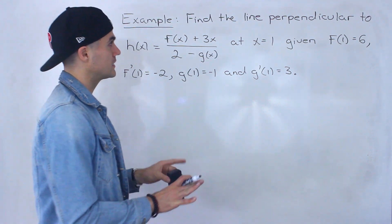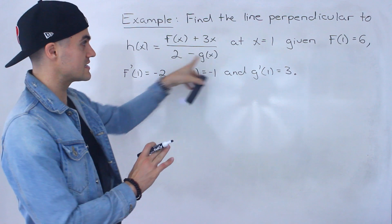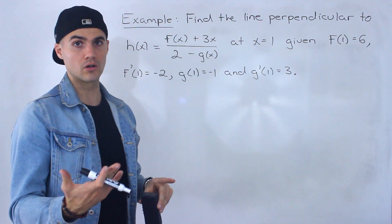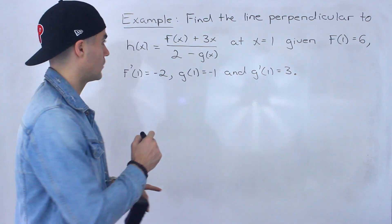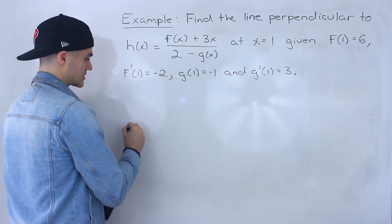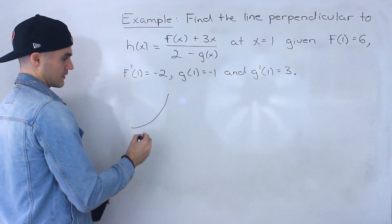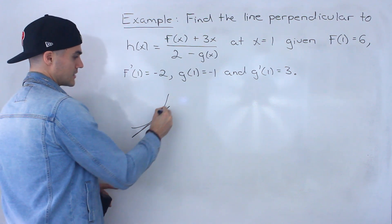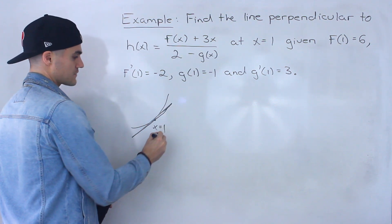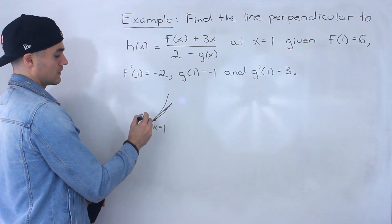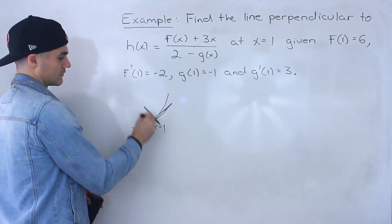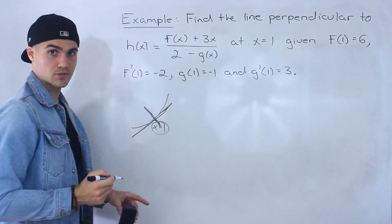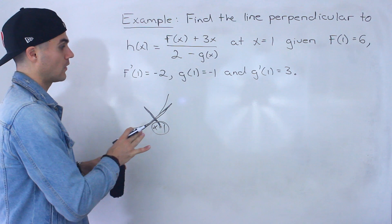So this one's a little tricky. When they're asking for a line perpendicular to this at an x value of 1, that's another way to ask for the normal at that x value. So let's just pretend that h of x looks like a curve, and at an x value of 1 we have the tangent. What they're asking for is the line perpendicular to the tangent at x equals 1 — that's visually what is happening.